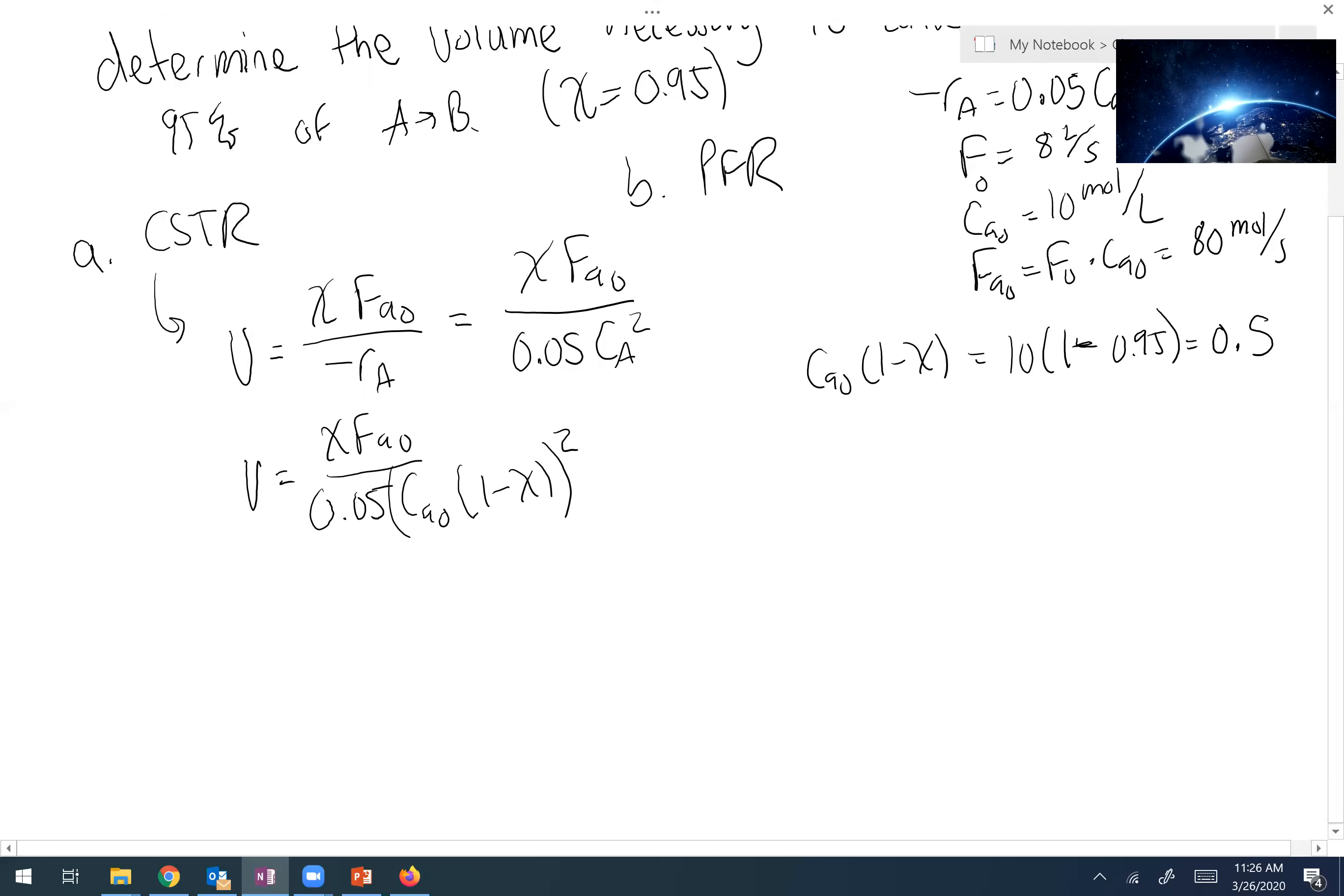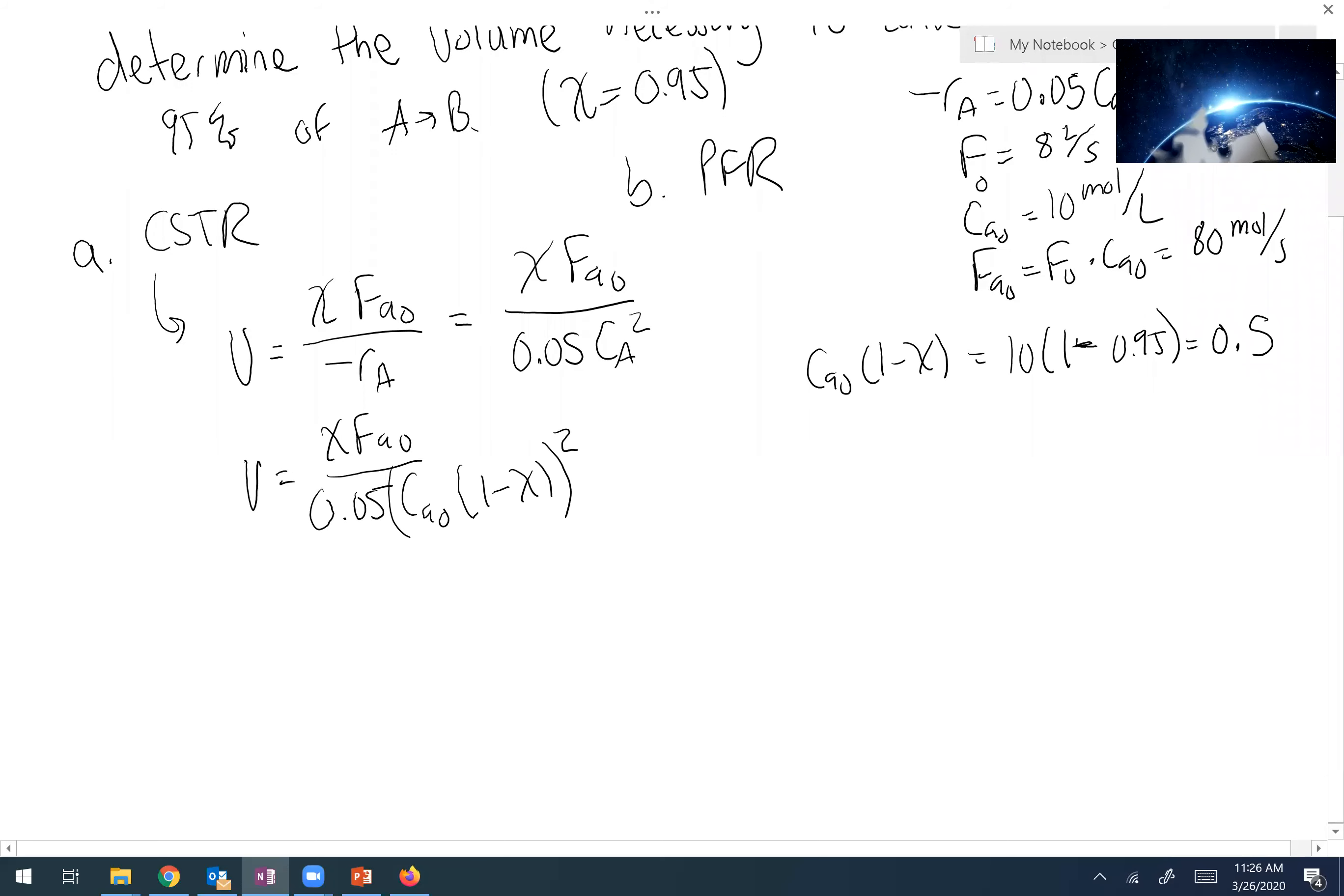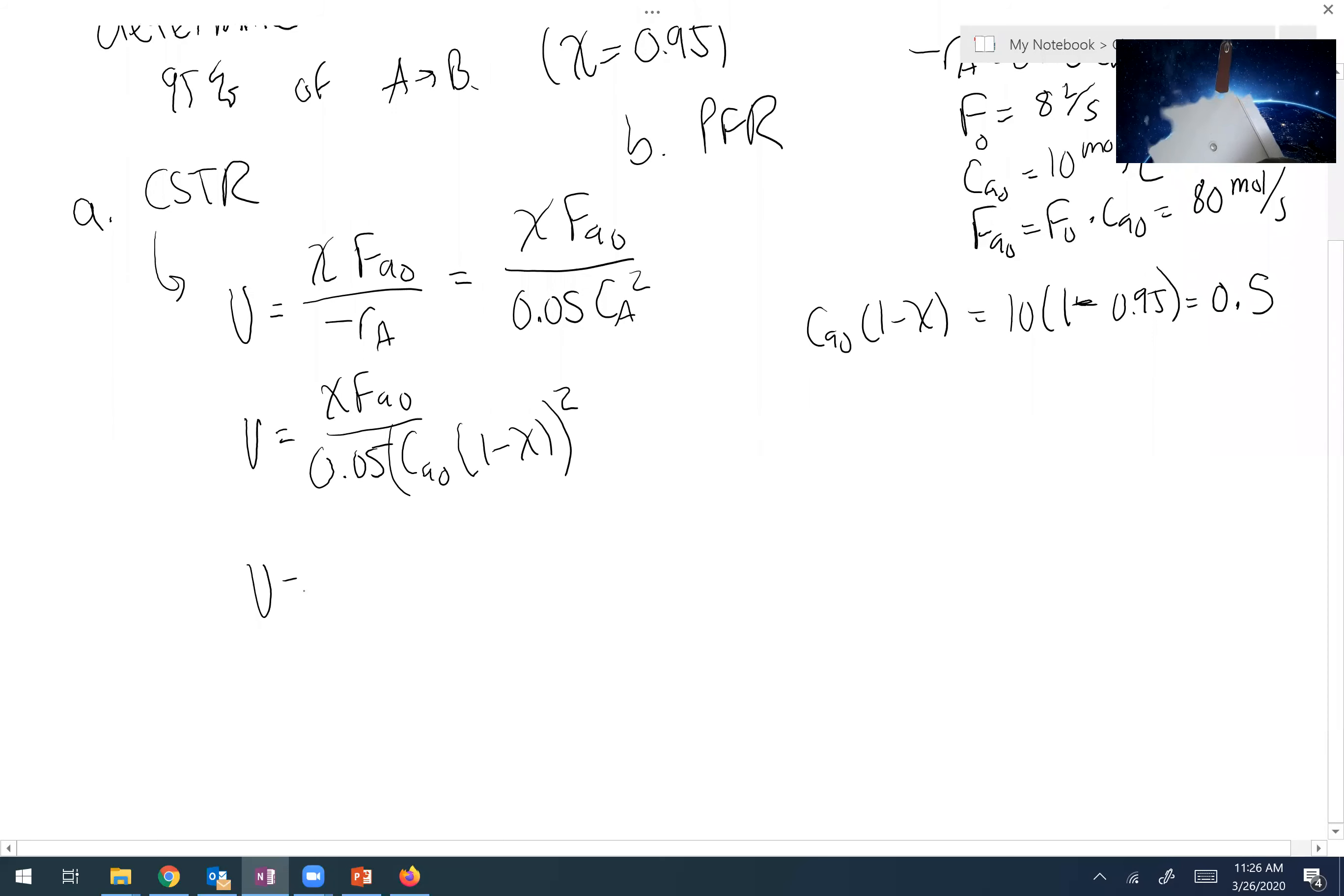So that means I can plug everything in and directly solve for my volume. V is 0.95 times 80 over 0.05 times 0.5 squared. If I do that, my solution becomes 6080 liters.